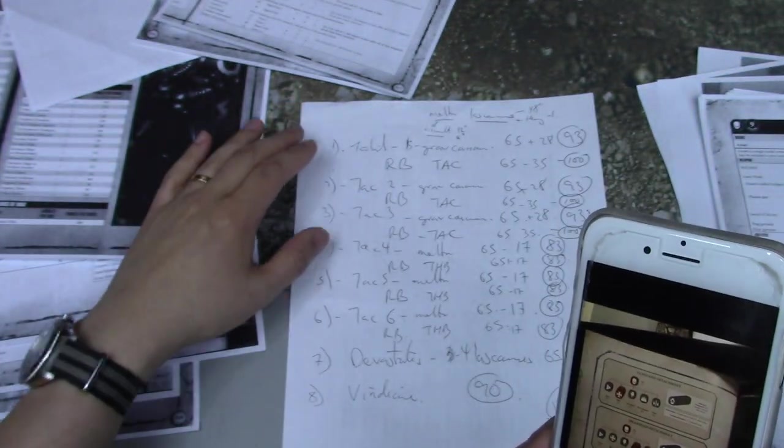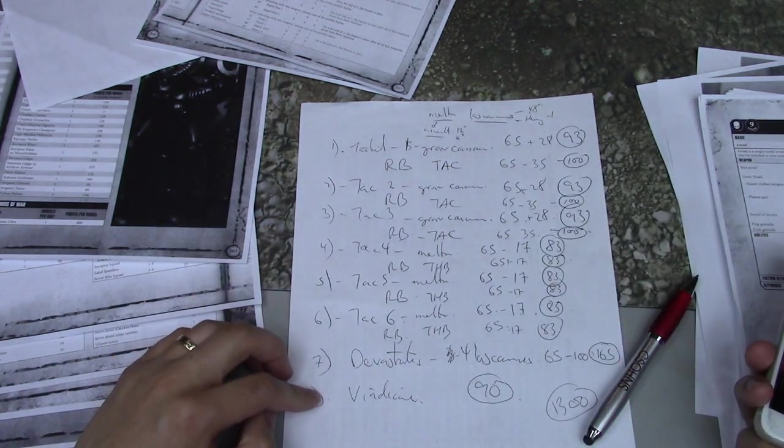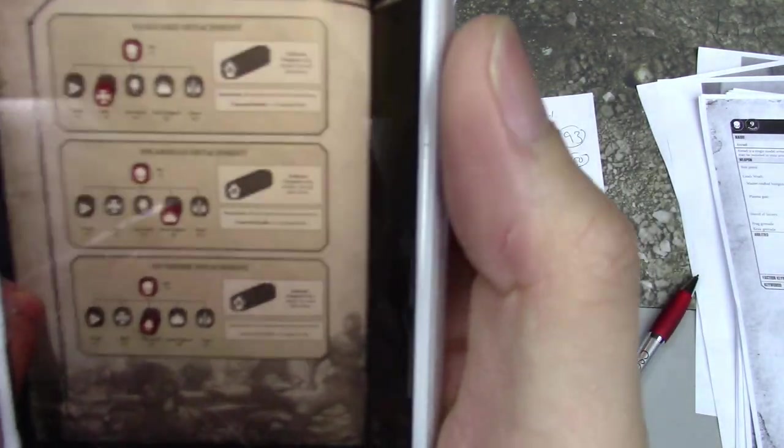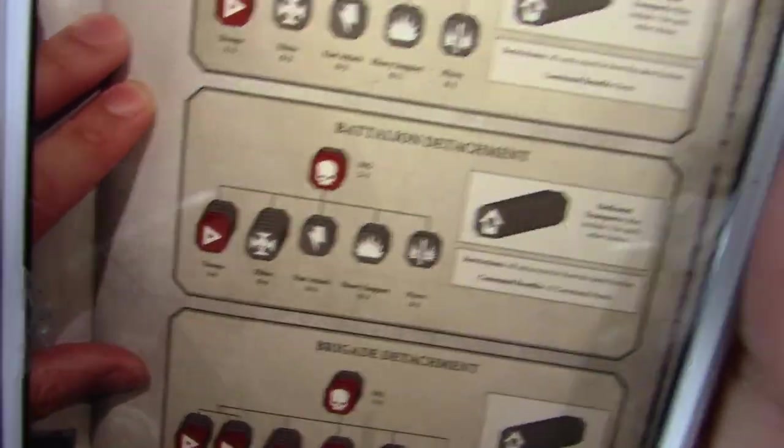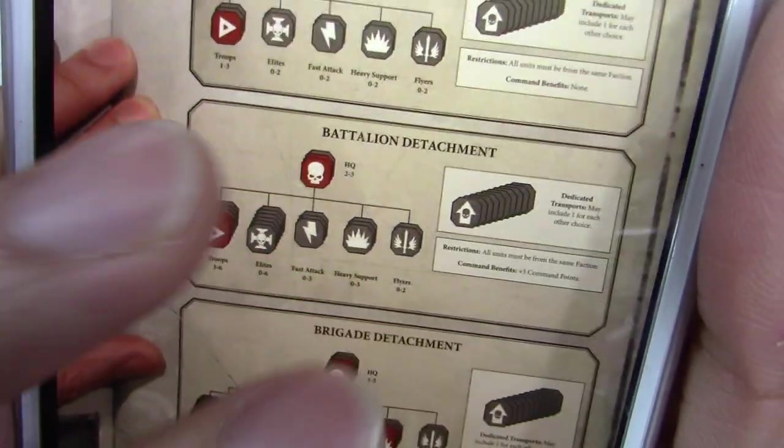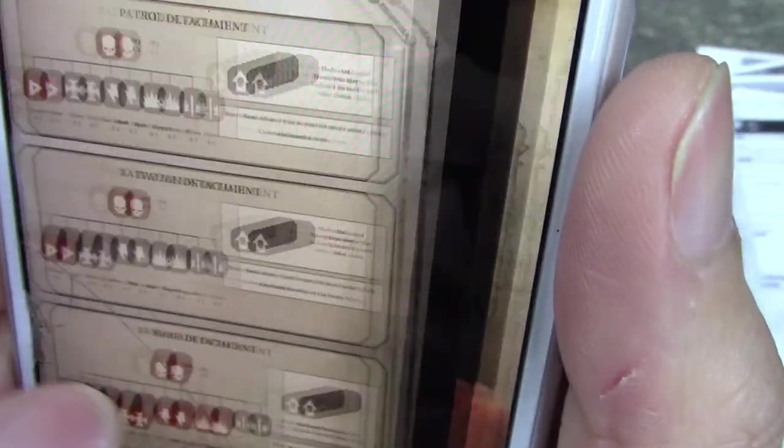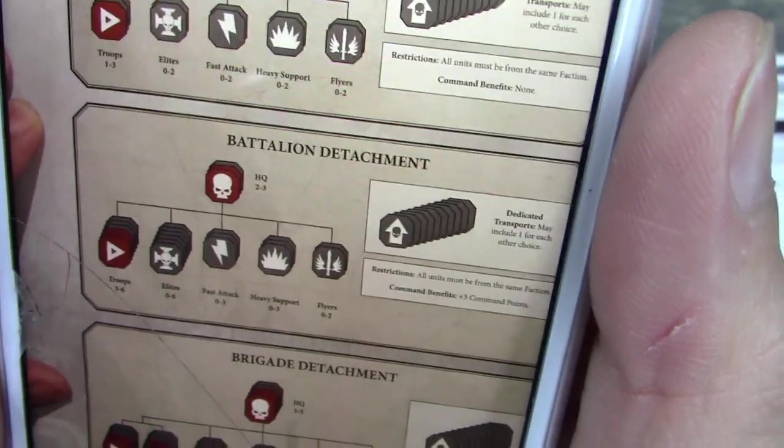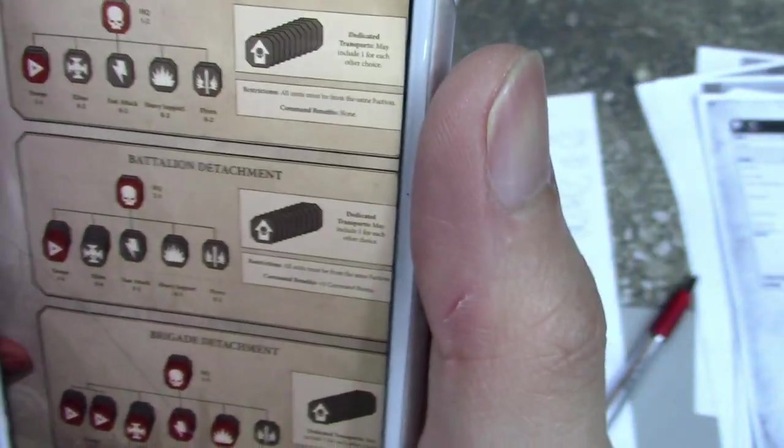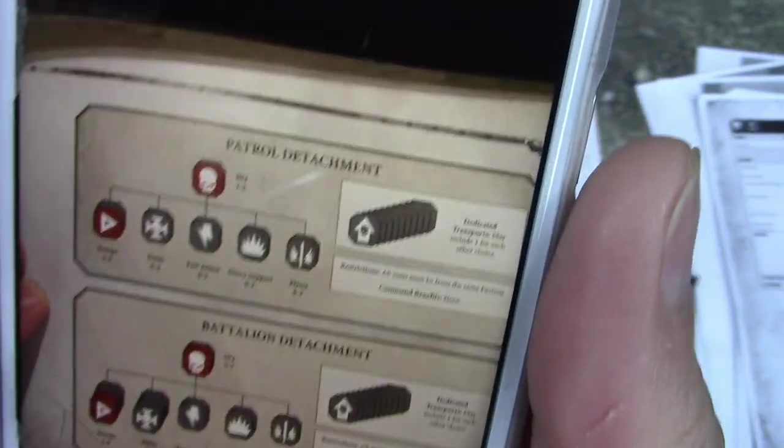So looking at my army, HQs aside, I have six troop choices and one heavy support and one elite. If I choose my battalion, I already have my 6 troop choices but only need 3, but I need 2 to 3 HQs. Every unit can take a dedicated transport and that doesn't take up any slots. So right now I'm working towards a battalion detachment, but if I have 4 HQs and split my troops into 3 and 3, I could actually have 2 battalion detachments and thus get 6 extra command points.